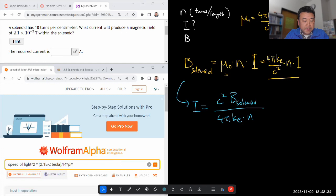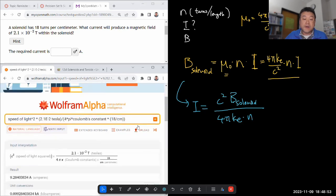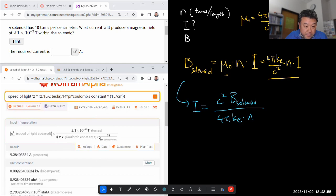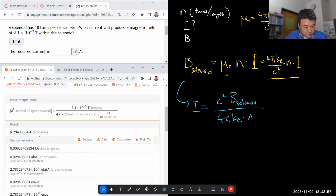So 2.1 times 10 to the power of minus 2 tesla divided by 4π times Coulomb's constant times n. So I should put it as 18 divided by centimeter. Turn is not a unit so I can just skip it. Yeah that should be it. And again hoping that it will give me a quantity in unit of ampere. Understood me correctly. Yeah unit of ampere. 9.28 ampere.